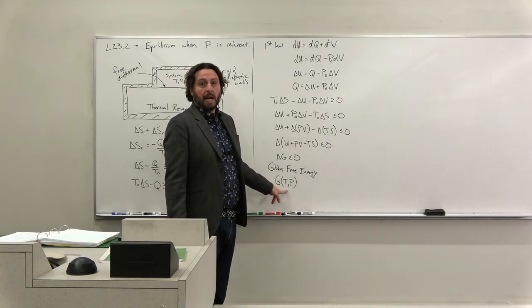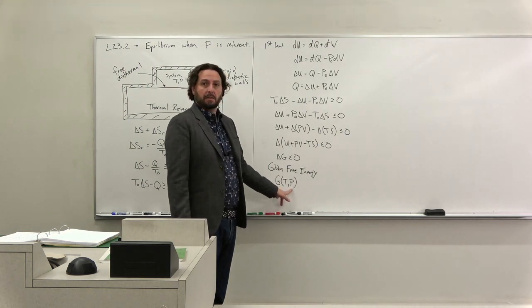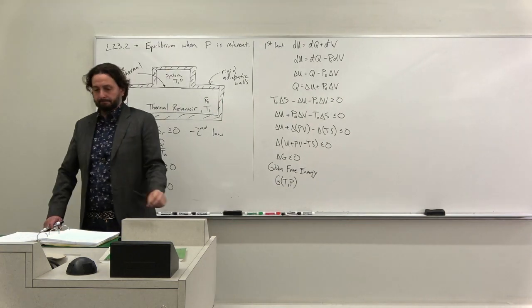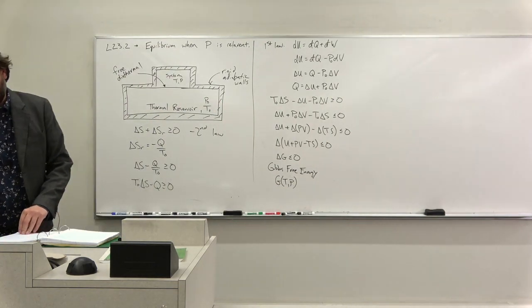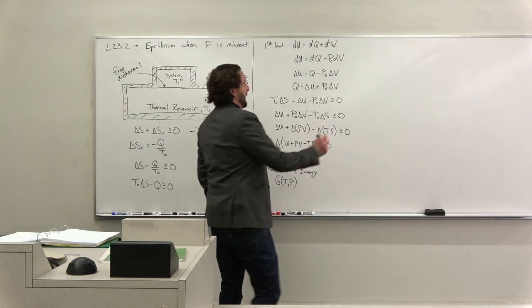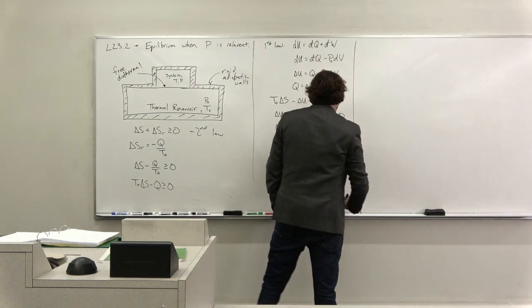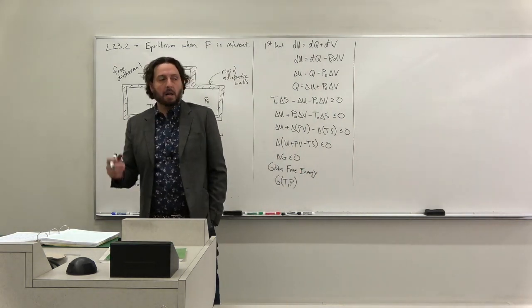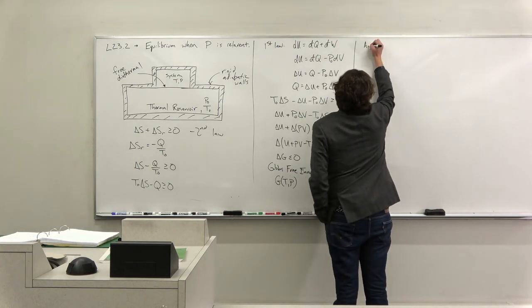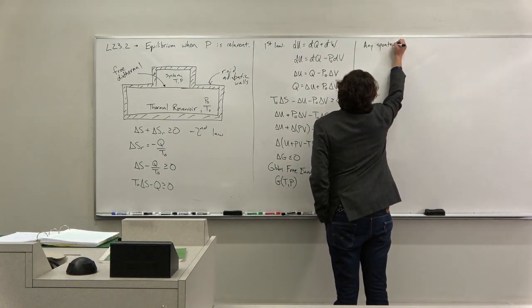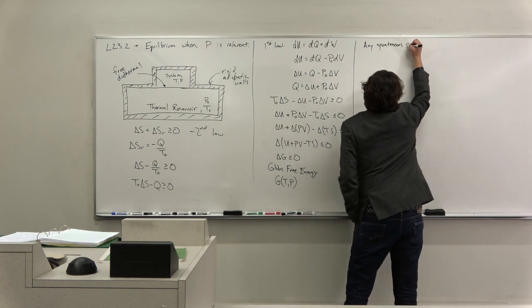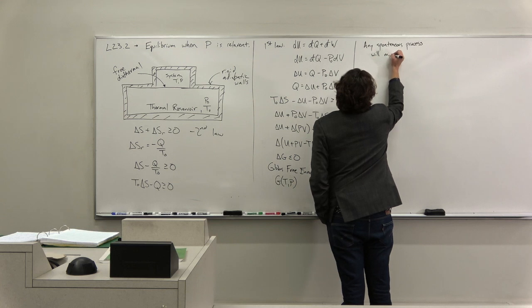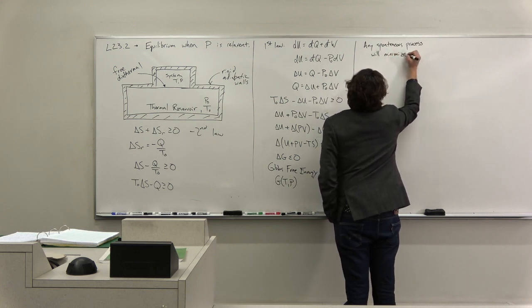Or, let's say you do a chemical reaction. Often you're going to do a chemical reaction at atmospheric pressure. And so you're going to be worried about T and P. So what that means is when temperature and pressure are the relevant variables, what the system wants to do is minimize any spontaneous process.